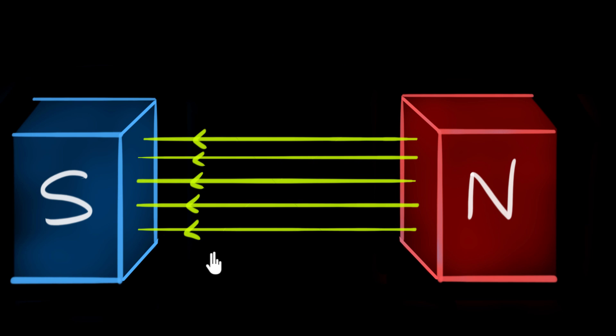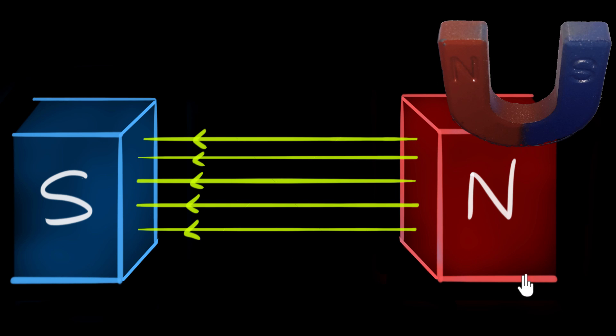Let's consider a magnetic field due to two pole pieces of a magnet. You can imagine these are two separate magnets or two poles of a horseshoe magnet.